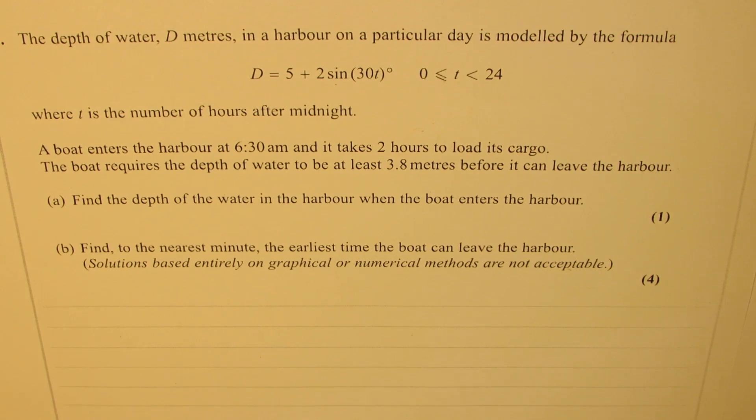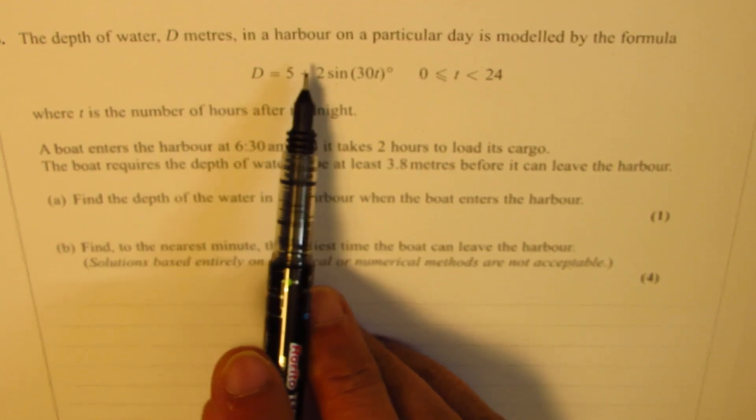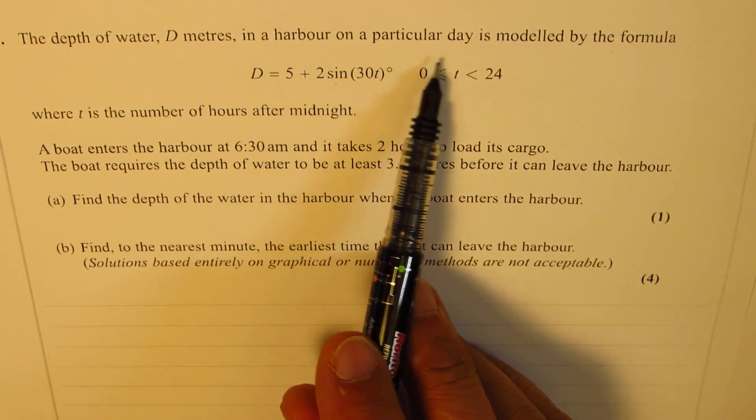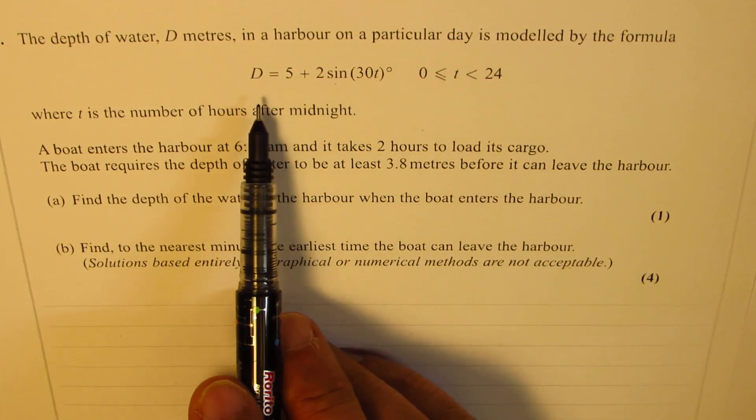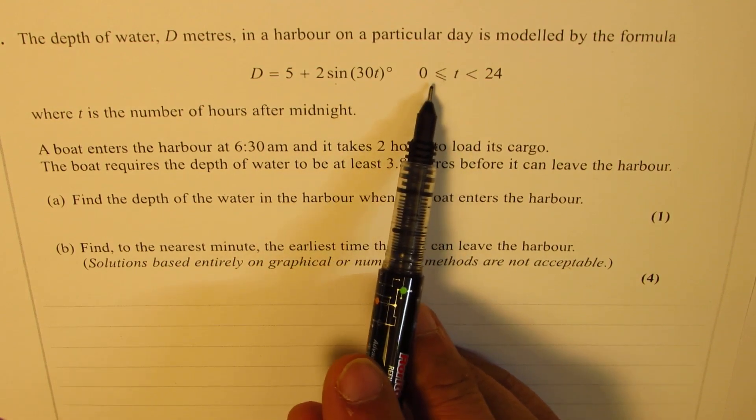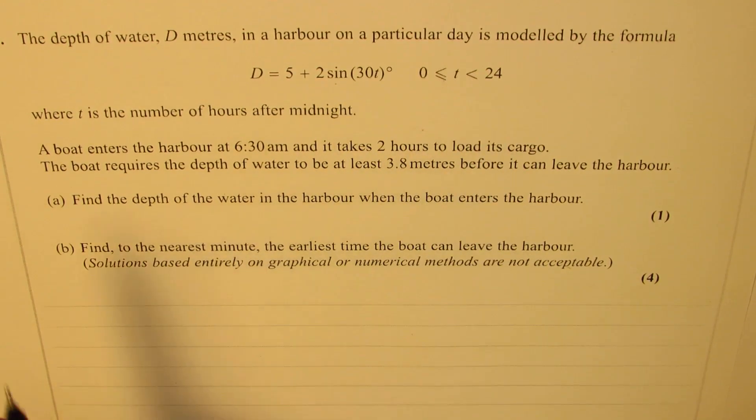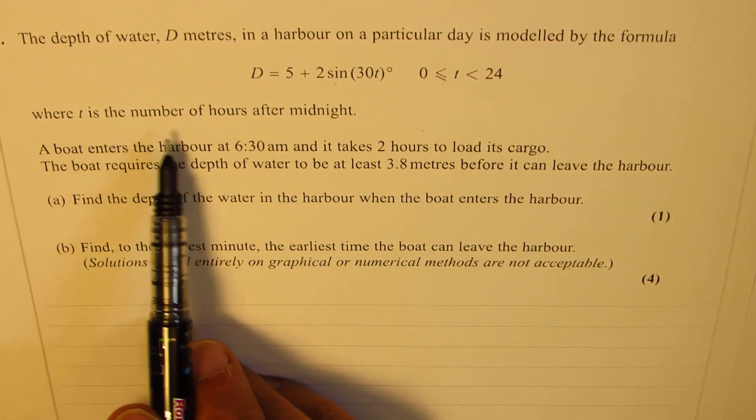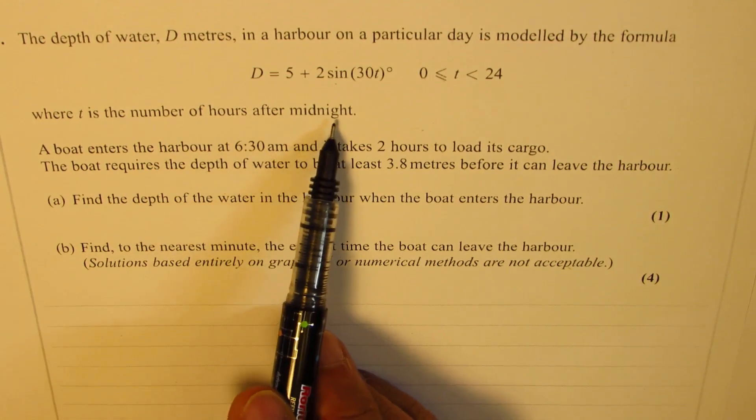The depth of water d meters in a harbor on a particular day is modeled by the formula d equals 5 plus 2 sine 30t, where t is greater than or equal to 0 and less than 24, where t is the number of hours after midnight.